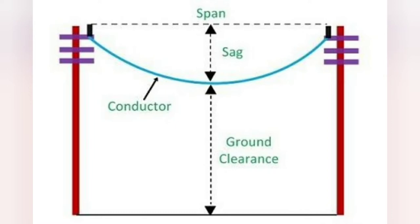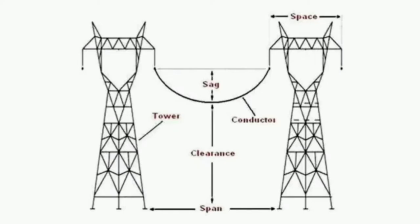The dip of conductor between the two level supports is called sag, or the vertical distance between the highest point of the electrical pole and the lowest point of the conductor between the two adjacent level supports is known as sag.